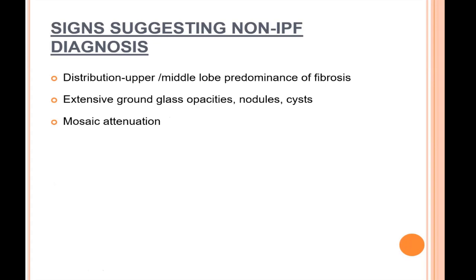Which signs suggest a non-IPF diagnosis? If we are dealing with extensive ground glass opacities, extensive nodular patterns, cysts in the lung parenchyma, mosaic attenuation pattern, or fibrosis that is predominantly in the upper and middle lobes, then we are dealing with a non-IPF diagnosis.